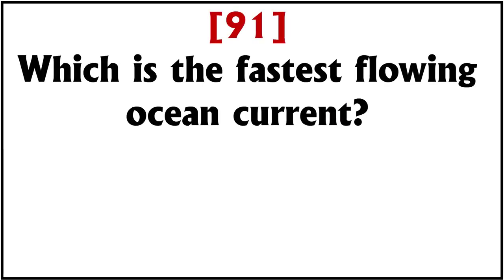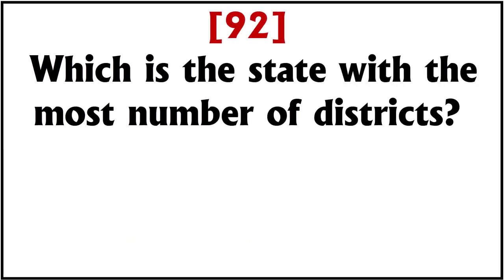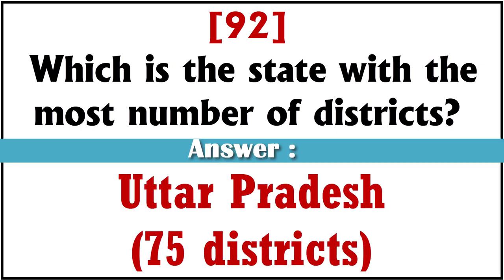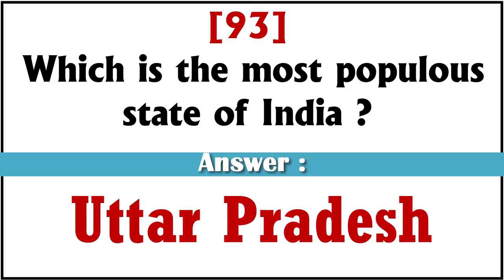Which is the fastest flowing ocean current? Gulf Stream. Which is the state with the most number of districts? Uttar Pradesh, with 75 districts. Which is the most populous state of India? Uttar Pradesh.